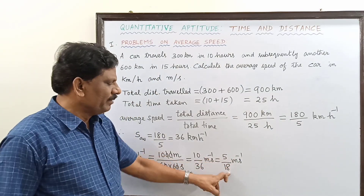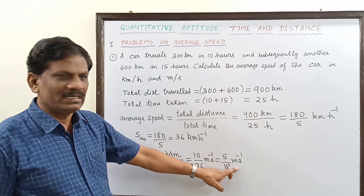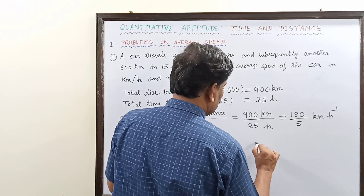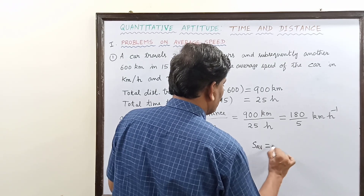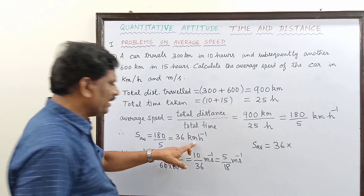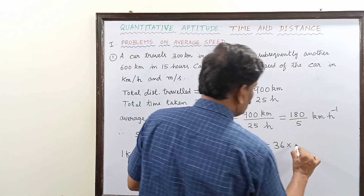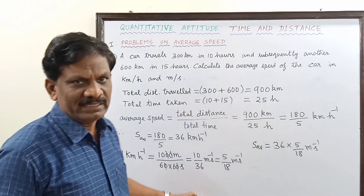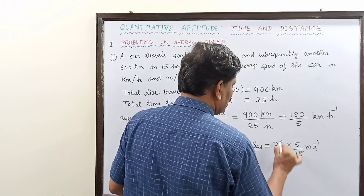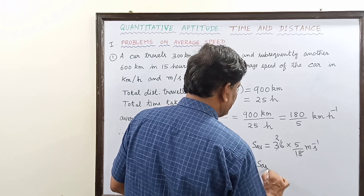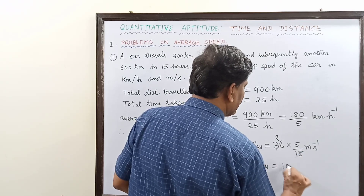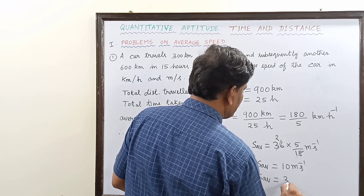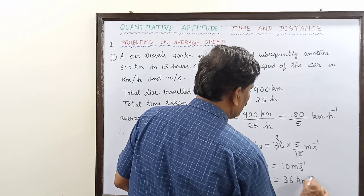So 1 kilometer per hour is equal to 5 by 18 meter per second. Therefore, 36 kilometer per hour: we substitute 1 km/h as 5 by 18, so the average speed is 36 multiplied by 5 by 18. Since 18 goes into 36 twice, we get 2 into 5, which is 10. Therefore, the average speed in meter per second is 10 meters per second, or equivalently 36 kilometer per hour.